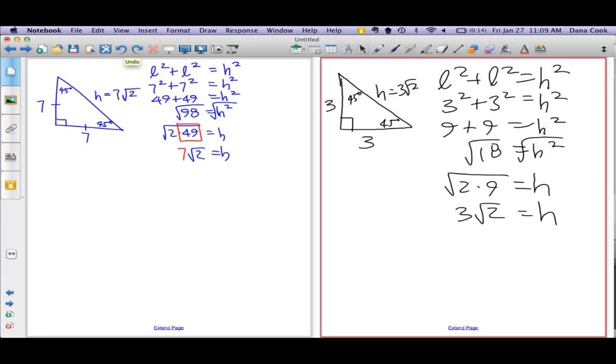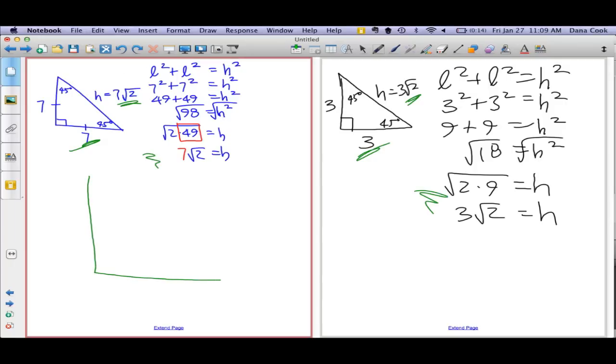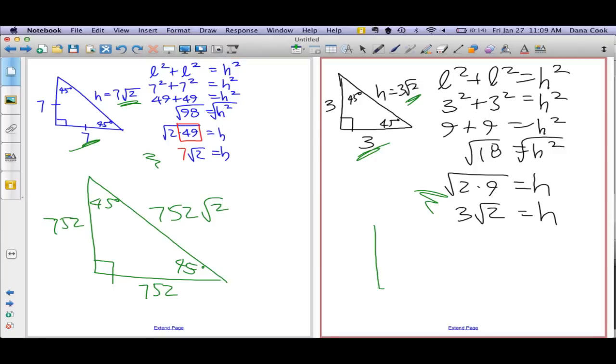Do you see any sort of pattern? The relationship between this number and that one looks very similar to the relationship of this number to that one. And I'm hoping that you're going to tell me that I will never have to do any of this work again because I'm going to recognize that when I have a 45, 90, 45, 90 triangle, that's one triangle.